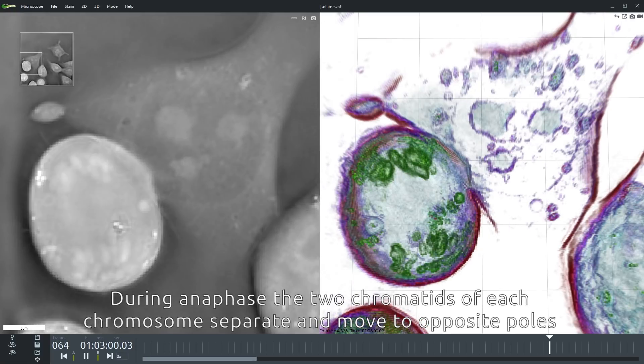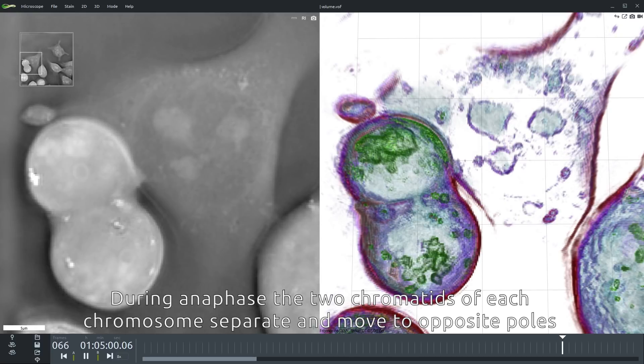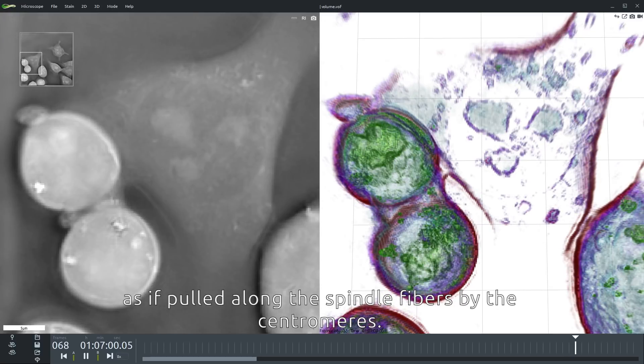During anaphase the two chromatids of each chromosome separate and move to the opposite poles as if pulled along the spindle fibers by the centromere.